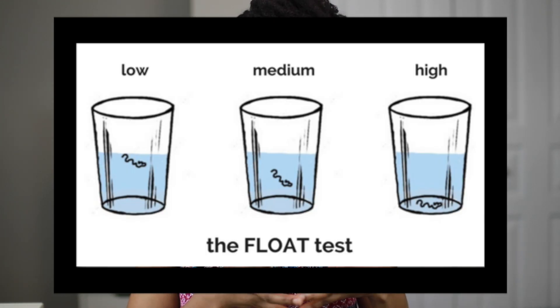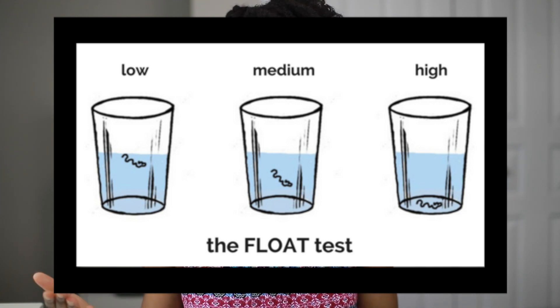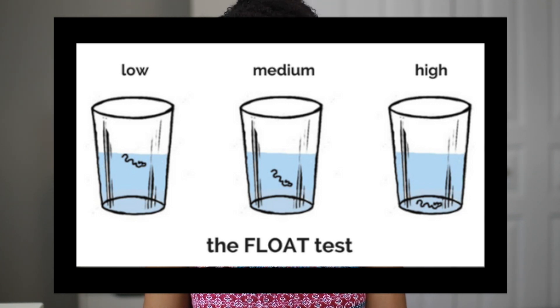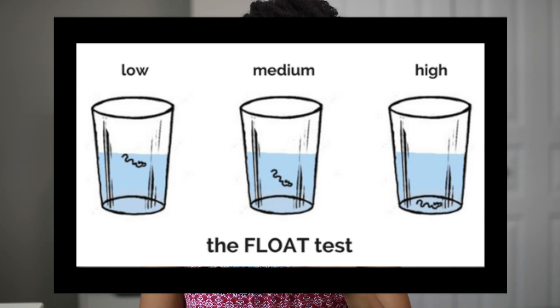Before you jump to conclusions based on what you've just learned, there are a few tests you can do to help figure out your porosity level — but I have to warn you, these tests are highly unreliable. The first is called the float test: take a cup of water, put a few strands of hair in, and see what happens. If your hair floats, you have low porosity; if it sinks to the bottom, you have high porosity; and if it stays in the middle, you have normal or medium porosity.